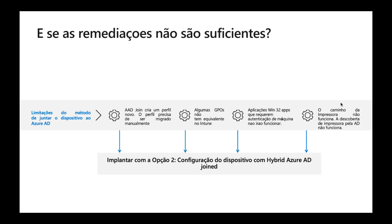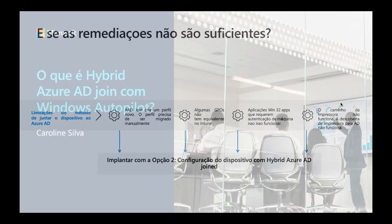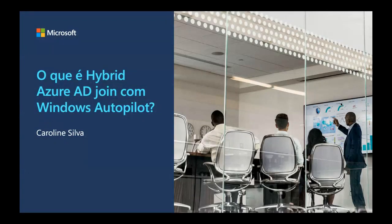Estes são os quatro cenários que os nossos clientes tipicamente encontram durante este processo. Caso achem que as recomendações não são suficientes e que as vossas organizações são mais complexas, o caminho a seguir será então o Hybrid Azure AD Join. Este cenário vai ser explorado pela minha colega Carol.